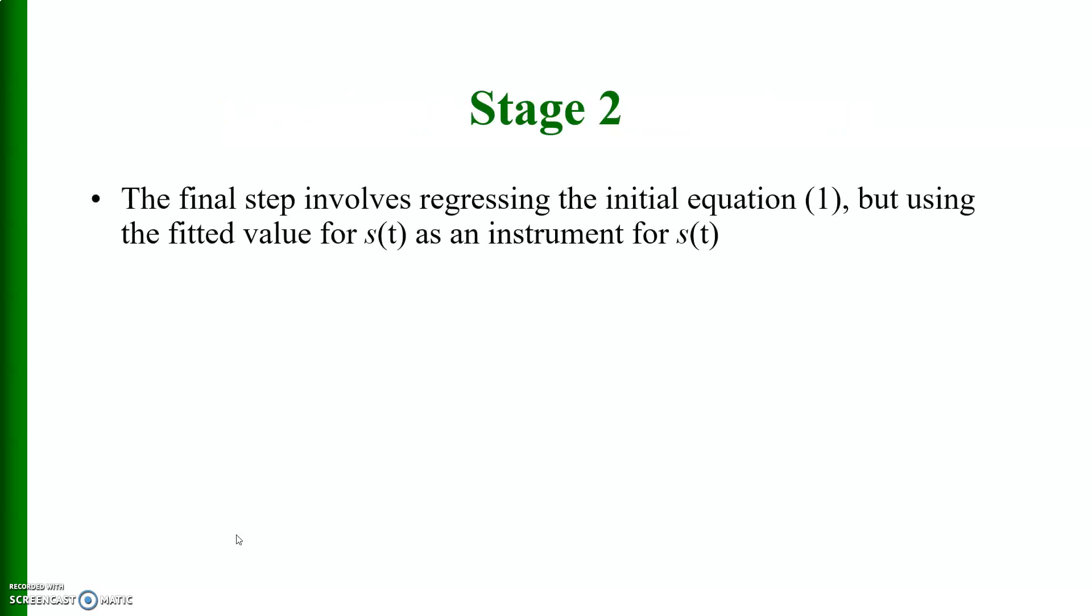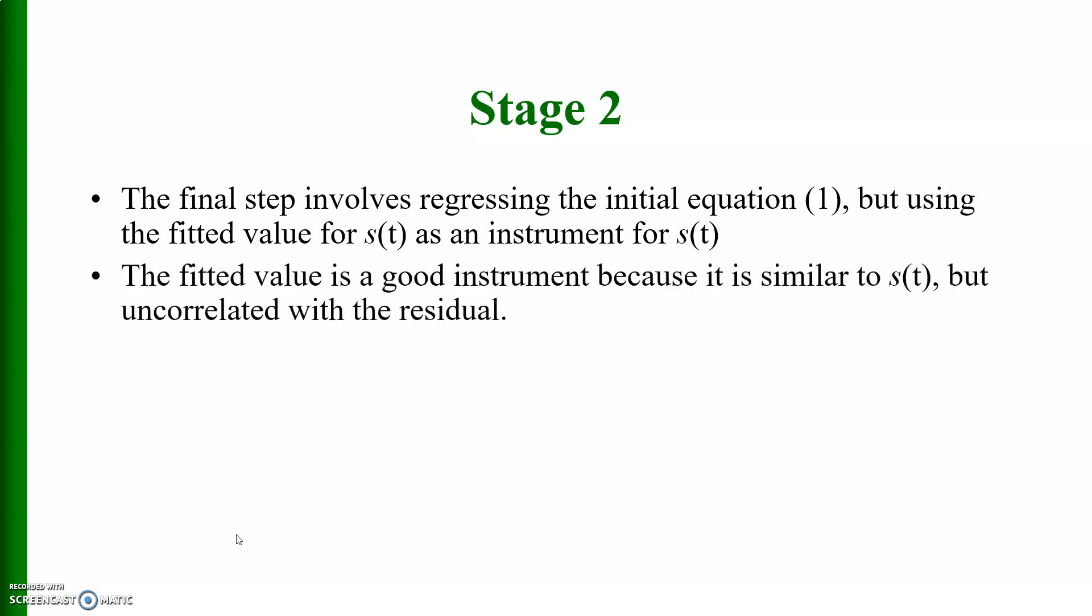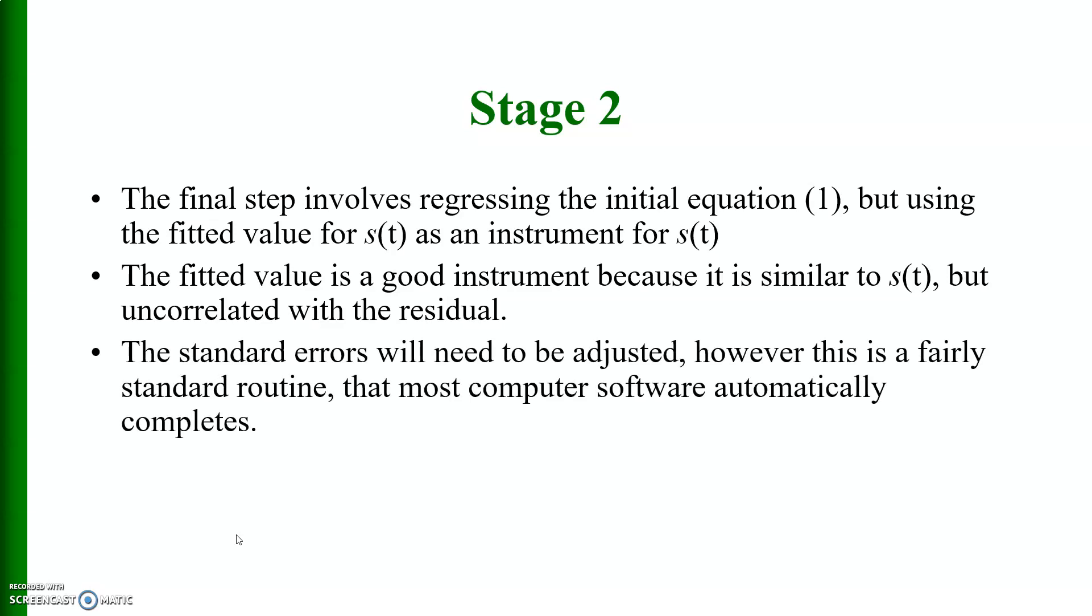Stage 2. The final step involves regressing the initial equation 1, but using the fitted value for s_t as an instrument for s_t. The fitted value is a good instrument because it is similar to s_t but uncorrelated with the residual. The standard errors will need to be adjusted. However, this is a fairly standard routine that most computer software automatically completes.